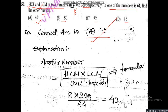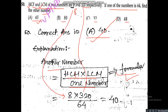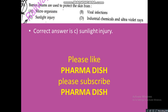The formula is: other number = HCF × LCM ÷ one number. Here HCF is 8, LCM is 320, and one number is 64. So 8 × 320 ÷ 64 = 40. Correct answer is Option A — 40.